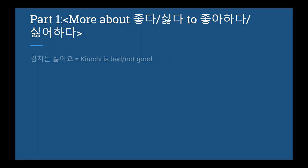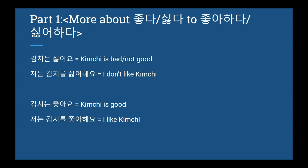김치는 싫어요 — kimchi is bad or not good. 저는 김치를 싫어해요 — I don't like kimchi. 김치는 좋아요 — kimchi is good. 저는 김치를 좋아해요 — I like kimchi. I personally don't like kimchi, but that's just my personal opinion. If you're not sure why these sentences are translated this way, make sure to check the lesson again — there's an extensively long explanation on this section.